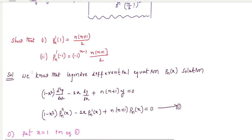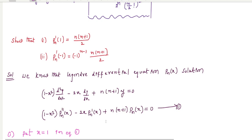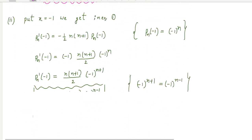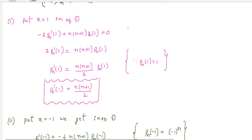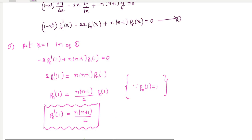To solve these two properties, please use the Legendre differential equation solution for P_n(x). This is our Legendre differential equation, where double prime indicates the second derivative, single prime the first derivative. Put x = 1 in this equation: the first term goes to 0, the second term gives -2, so you get P_n'(1) equals n(n+1)/2.